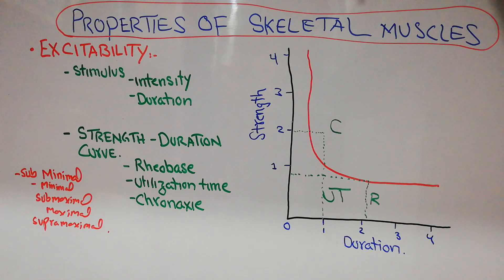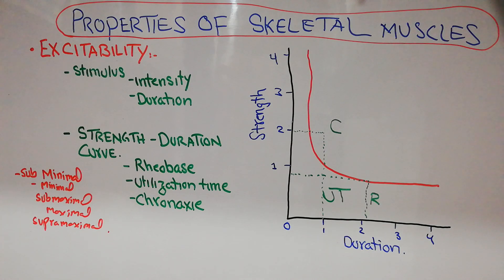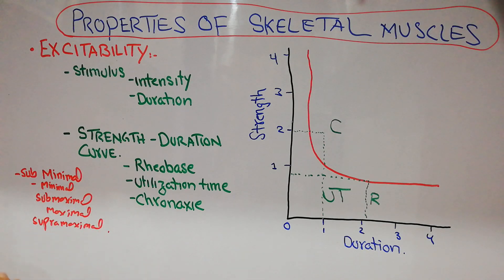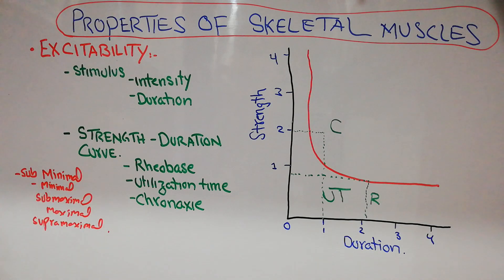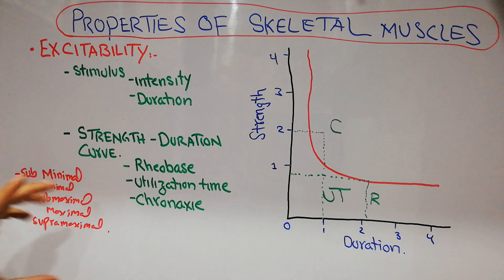If a muscle is resistant enough that it cannot be excited by the minimal stimulus, then a higher stimulus will be required to activate it — that is known as submaximal, which is a little below the maximal stimulus. The maximal stimulus is the one that produces maximal contraction in the muscle. The supramaximal is the level above which no further increase in force of contraction is possible.